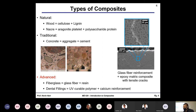Traditional composites include concrete: the aggregate — all the stones — is the reinforcement phase, and the cement is the continuous matrix phase. Civil engineers get really upset if you use cement and concrete interchangeably. What we'll mostly focus on in this class, highlighted in red, are advanced composites: glass fiber/epoxy and carbon fiber/epoxy — your traditional aerospace and wind energy grade materials — and also things like dental fillings, which are a UV-curable polymer with calcium reinforcement.